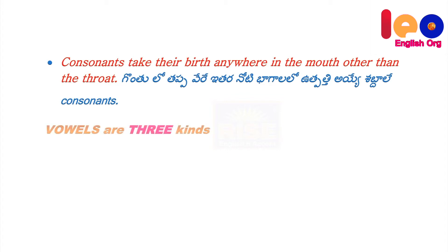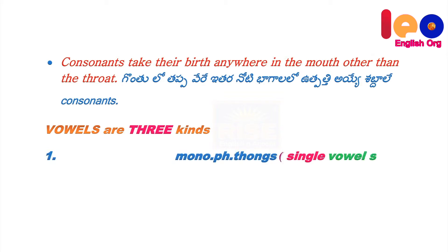Vowels are three kinds. First, Monophthongs — they are single vowel sounds. They are 12 in number.